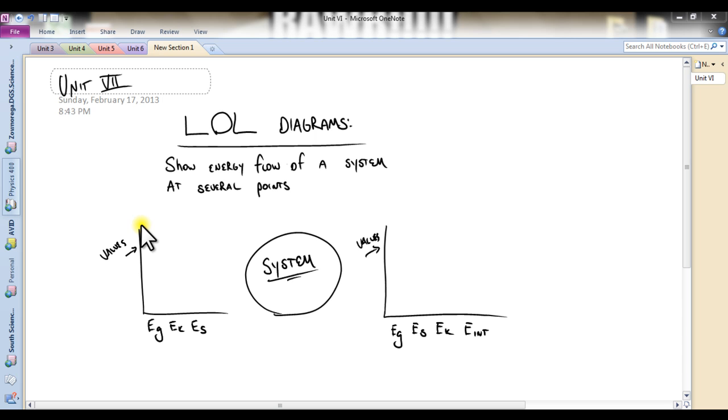This is a unit 7 energy, and an LOL diagram, just kind of taking a look at the picture. First off, you see the LOL. It will show you energy flow of a system at several points in time, so very similar to the pie charts. Pie charts, however, these are actually now bar charts. You might have seen them in chemistry last year called energy bar charts. Basically the same thing. There's a few differences, though.